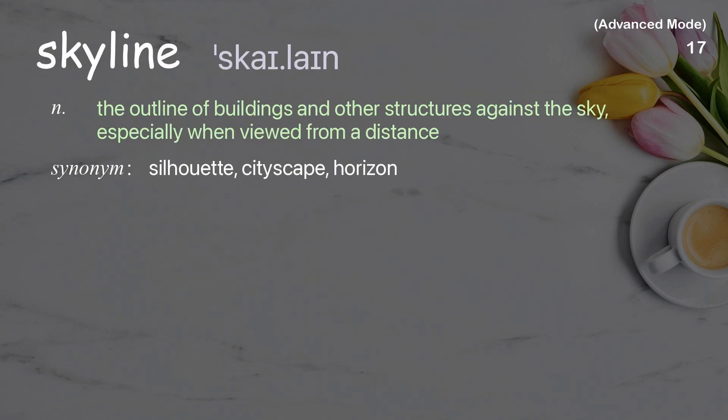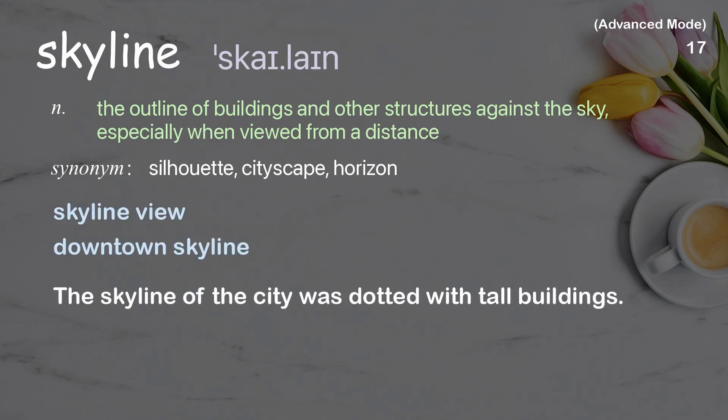Skyline: The outline of buildings and other structures against the sky, especially when viewed from a distance. The skyline of the city was dotted with tall buildings.